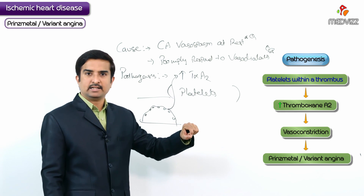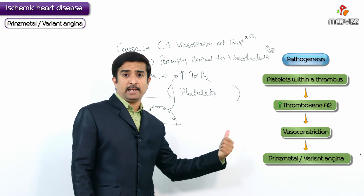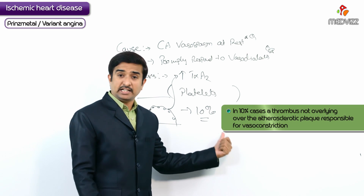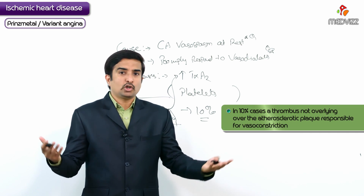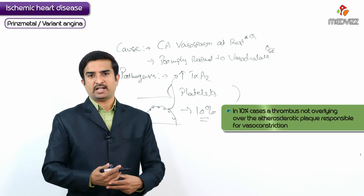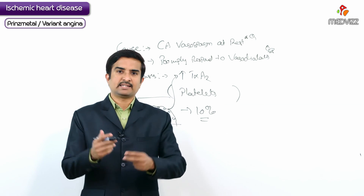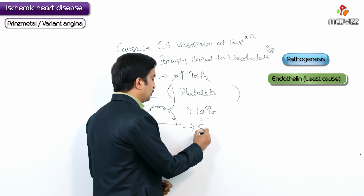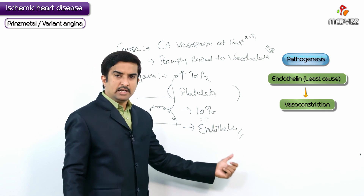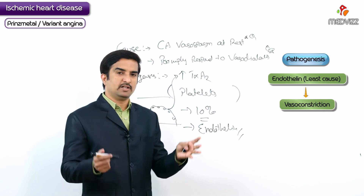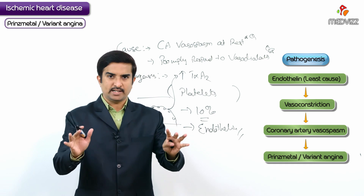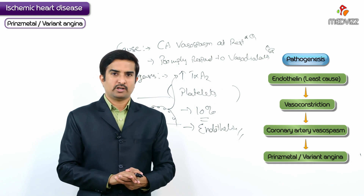In approximately 10% of cases, a thrombus not overlying an atherosclerotic plaque is also responsible for vasoconstriction leading to coronary artery vasospasm. Additionally, endothelin — which is a vasoconstrictor — is also considered responsible for vasoconstriction and contributes to intermittent coronary artery vasospasm.